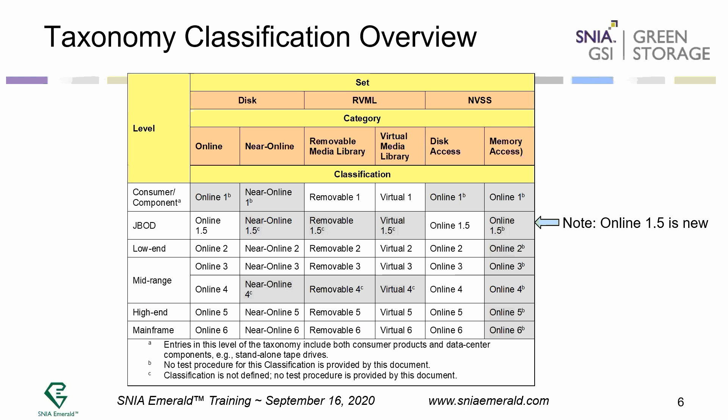This goes into more detail on the taxonomy classifications. We've added a category called 1.5, which is the JBOD category, as opposed to the low-end system, which is the online 2 system. In ENERGY STAR, an online 2 system requires a controller and data protection. A dumb JBOD would have neither. But in the EU's ERP regulation, they require JBODs to be tested as part of a storage system — a JBOD being one without a controller. So we've made that distinction between the two.